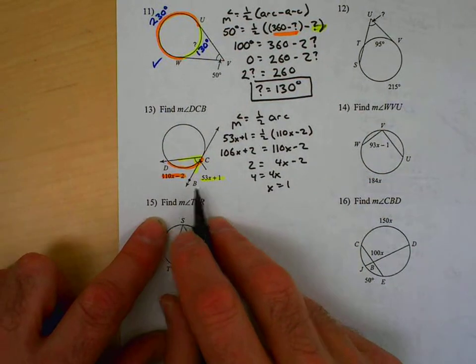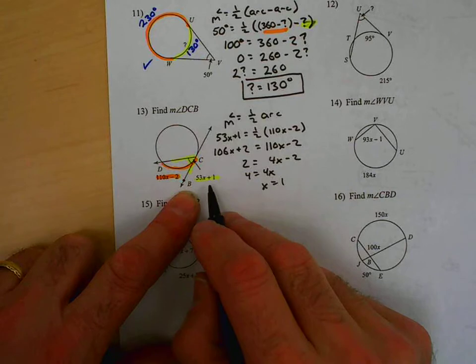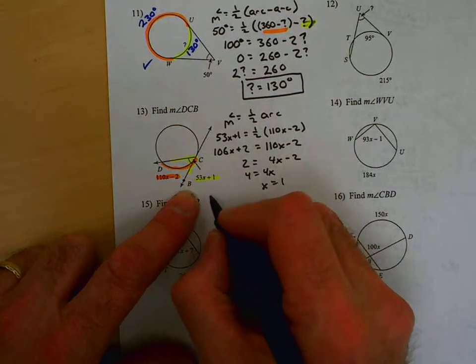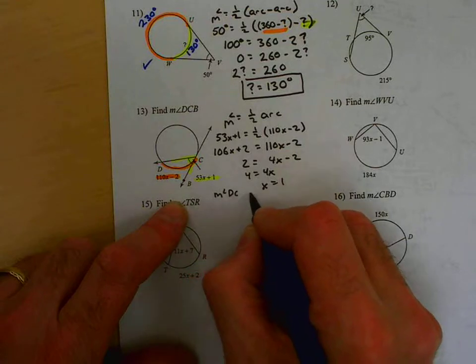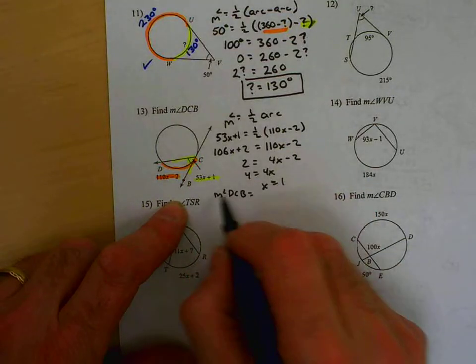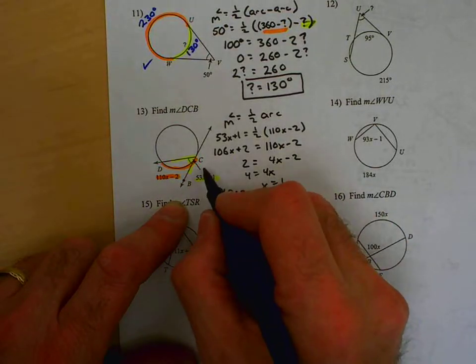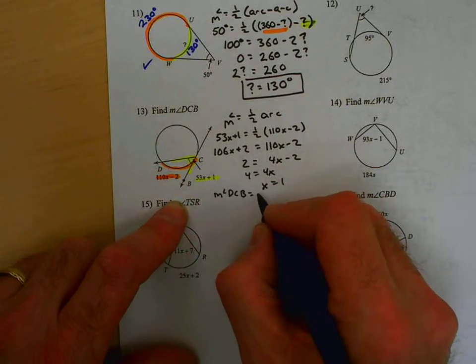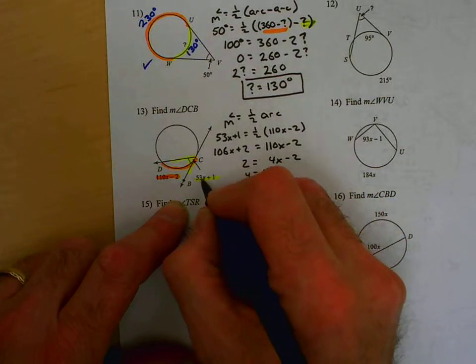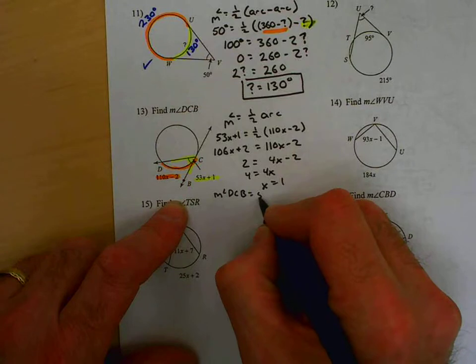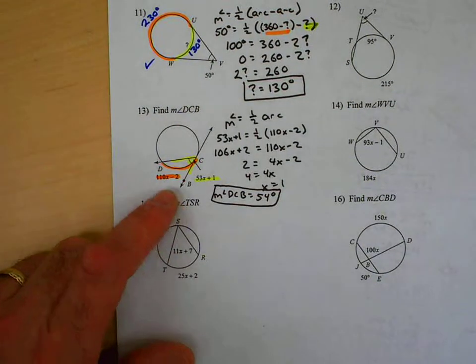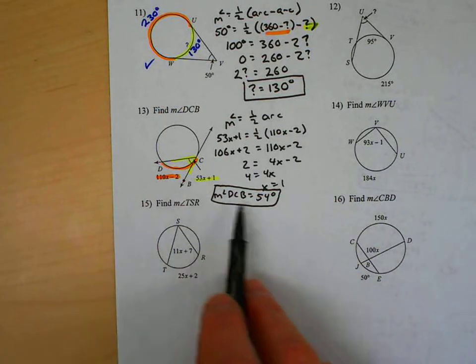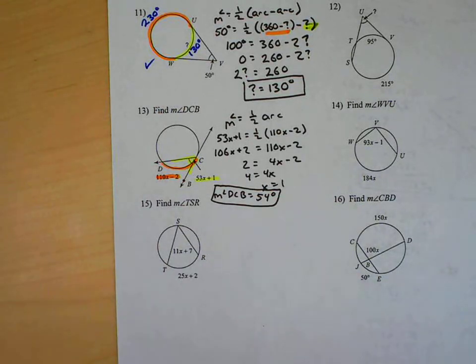Now, back to what we were doing. The measure of the angle that we're looking for. The measure of angle DCB equals 53 times one plus one. 53 times one is 53, plus one is 54 degrees. That was me plugging one into here, and you can see that that's going to be 54 pretty easily.